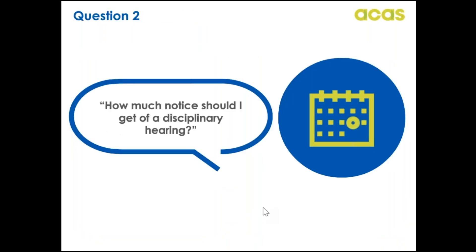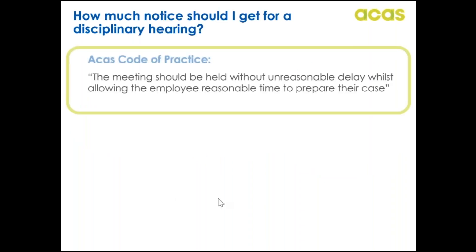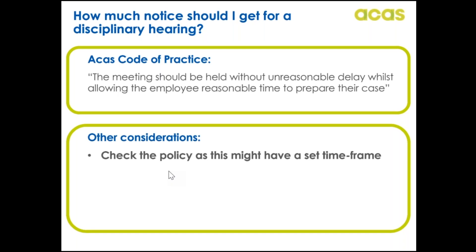Our next question is: 'How much notice should I get of a disciplinary hearing?' To comply with the ACAS code of practice, hearings should be held without unreasonable delay whilst allowing the employee a reasonable time to prepare their case. It is common to give a minimum of 48 hours' notice, but this is a minimum — depending on the complexity of the case. For example, if the investigation took three months, 48 hours is unlikely to be reasonable for an employee to go through the evidence and prepare. Some organisations will have a time frame set out in their policy and this must be adhered to.